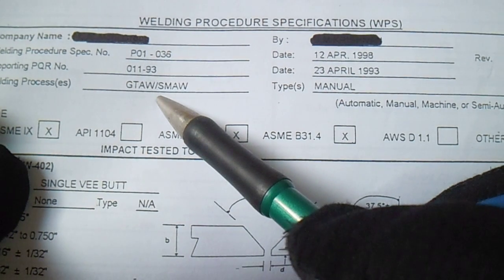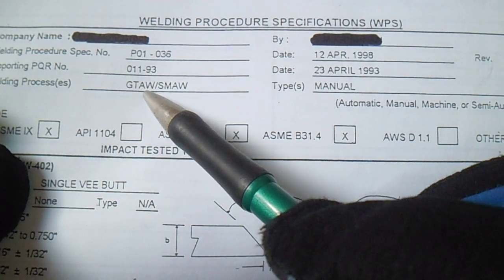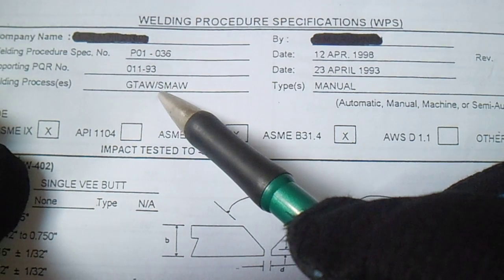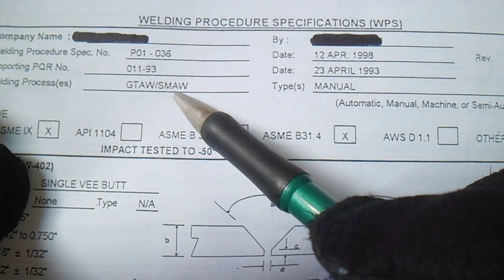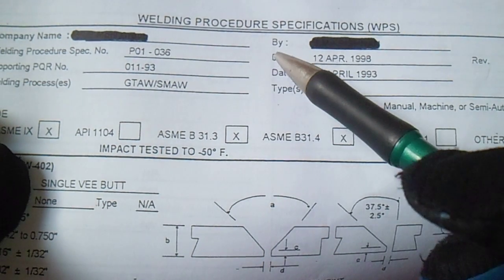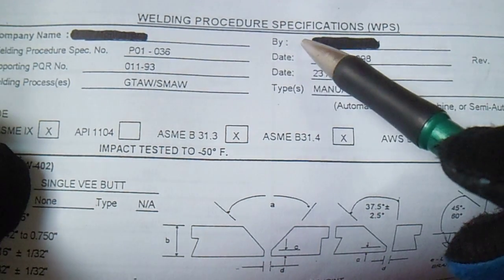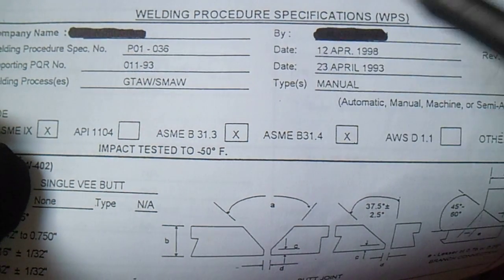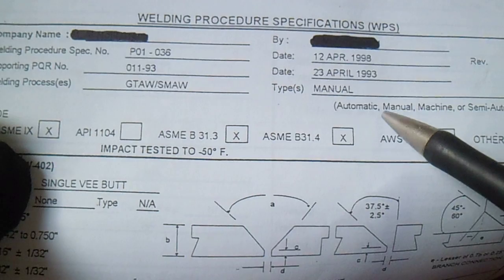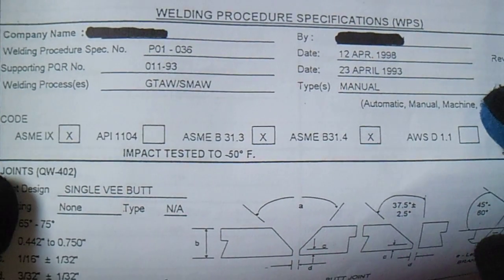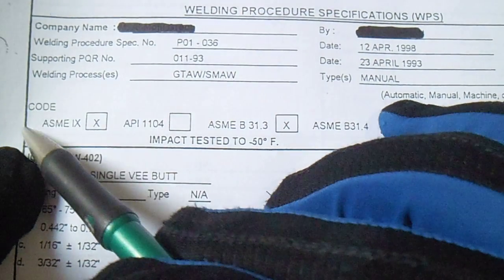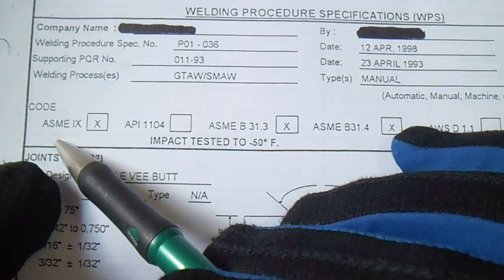The welding processes are GTAW and SMAW — that is Gas Tungsten Arc Welding and Shielded Metal Arc Welding. The data type is manual.